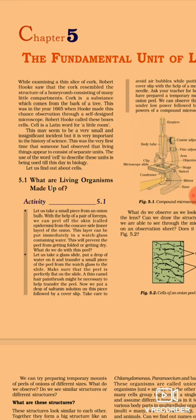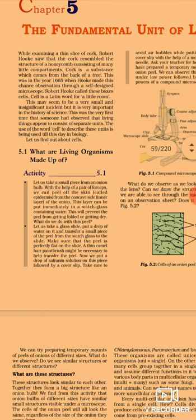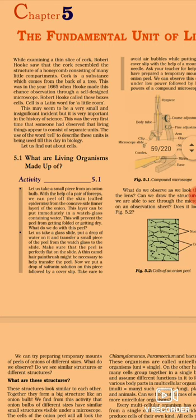So it looked like a honeycomb of bees. Those box-like structures are what Robert Hooke named 'cells.' This term is still being used till this day in biology — we still call that unit a cell.